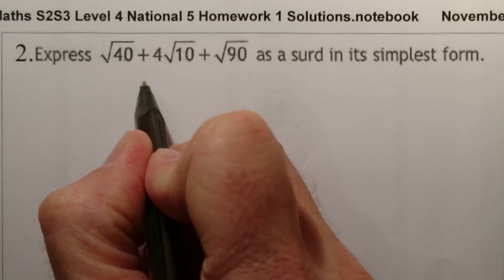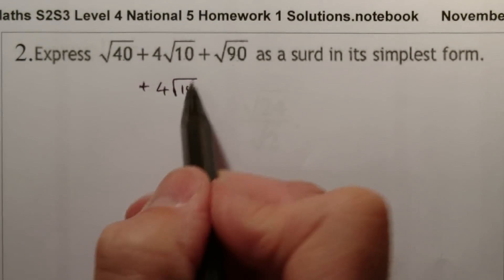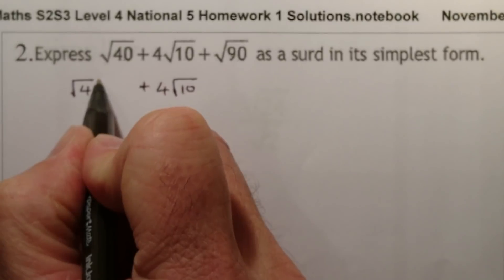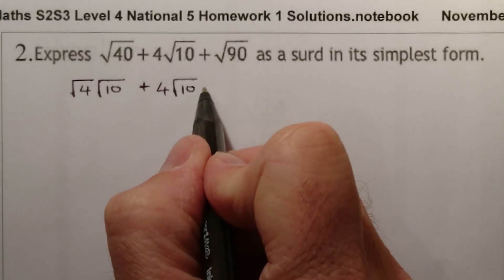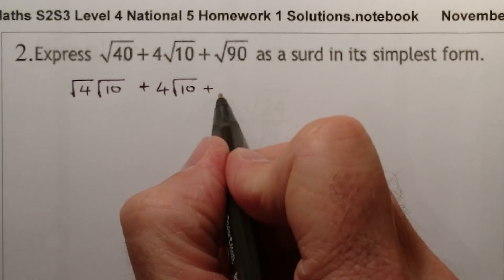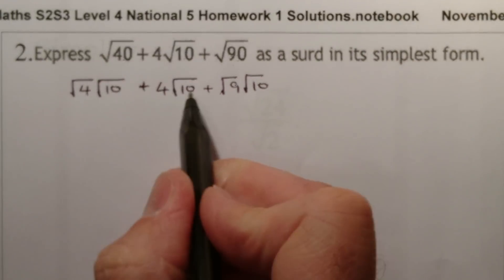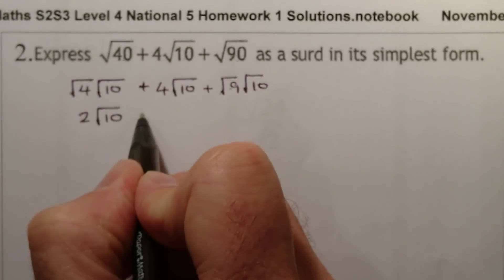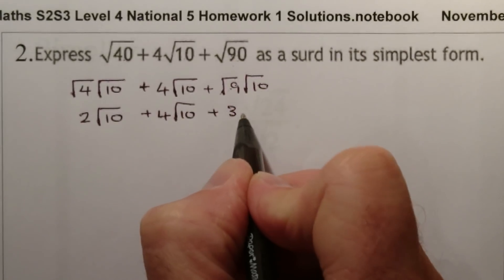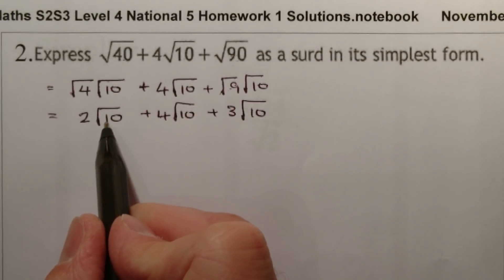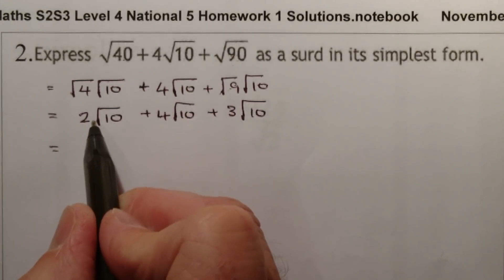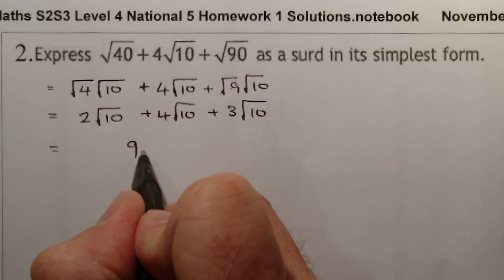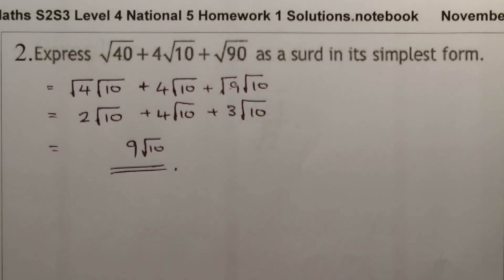Since root 10 is our clue: dividing 40 by 10 gives 4, which is a square number, so root 40 = 2 root 10. Dividing 90 by 10 gives 9, so root 90 = square root of 9 times root 10 = 3 root 10. Now I've got root 10 in all of them: 2 root 10 plus 4 root 10 plus 3 root 10. That's 2+4+3 = 9, giving a final answer of 9 root 10.